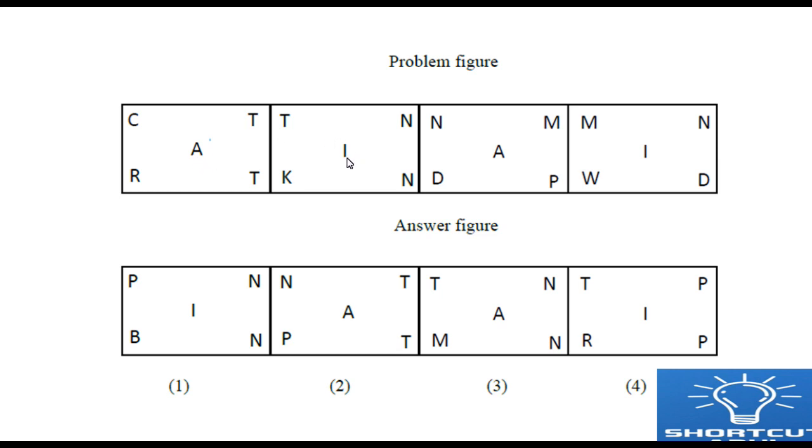What would be better is just observe the middle alphabet. Here A, here I, here A, here I. So first A, I, A, I. So next figure should start with A. How many options are there in the middle with A? So either second option or third option. This is what I am following from my first slide. So either second option or third option is the answer.